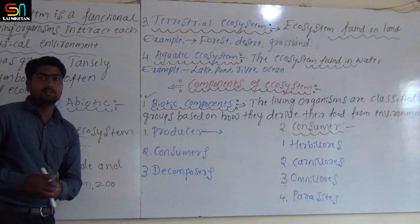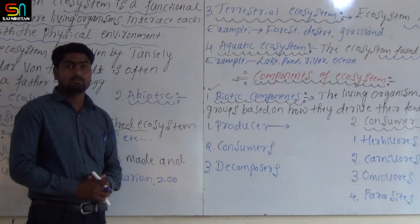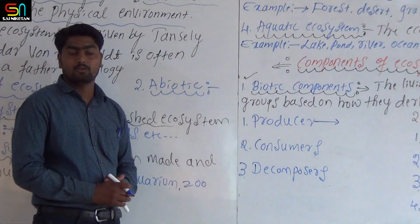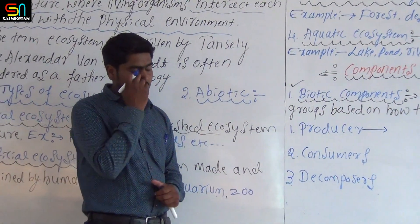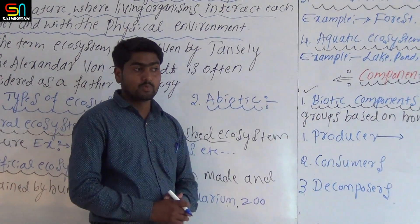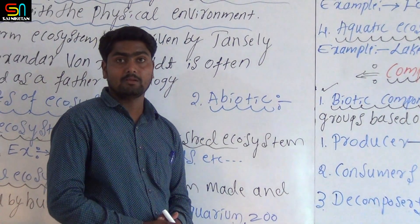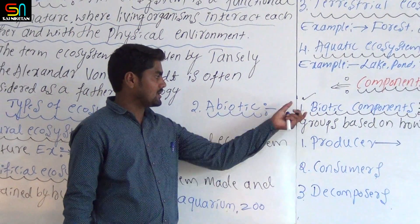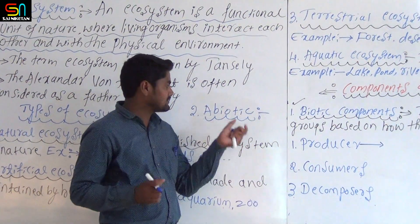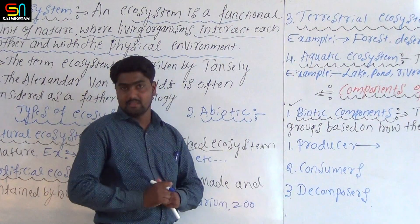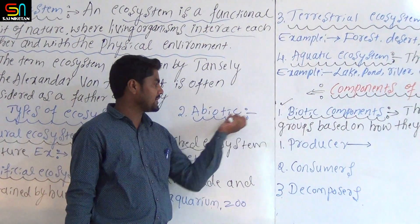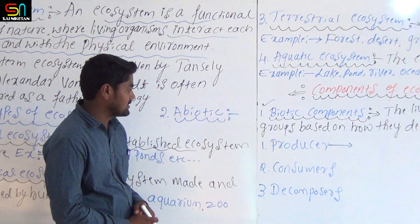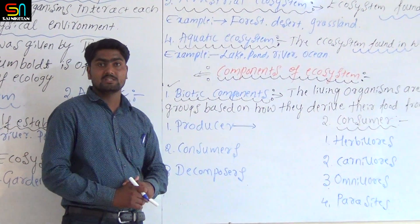The abiotic component is the non-living component of an ecosystem. This includes water, soil, sunlight, and air. The biotic and abiotic components interact with each other within the ecosystem.